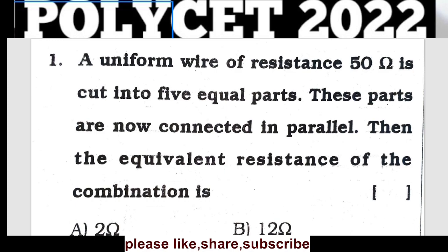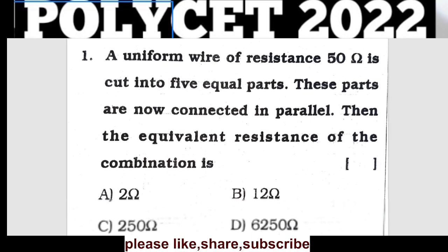Question 1: A uniform wire of resistance 50 ohms is cut into 5 equal parts. These parts are now connected in parallel. What is the equivalent resistance of the combination?